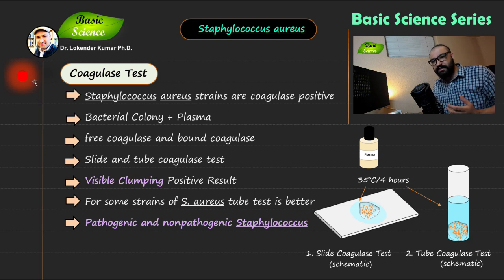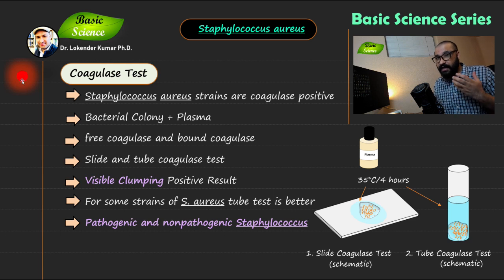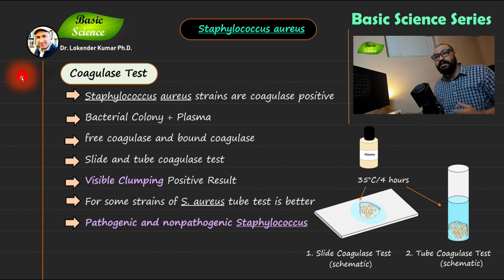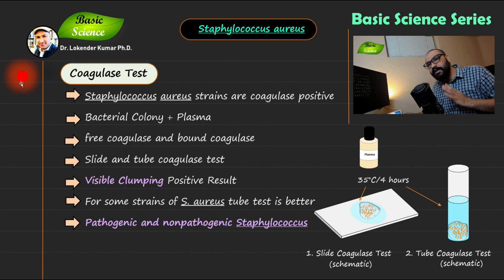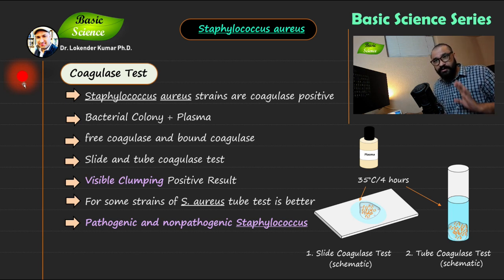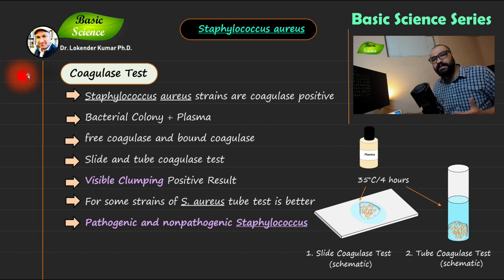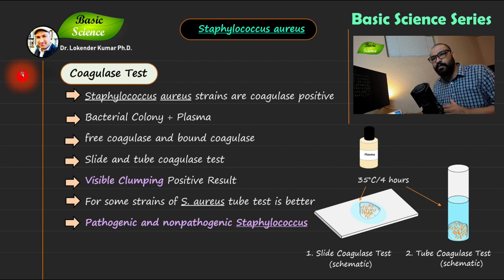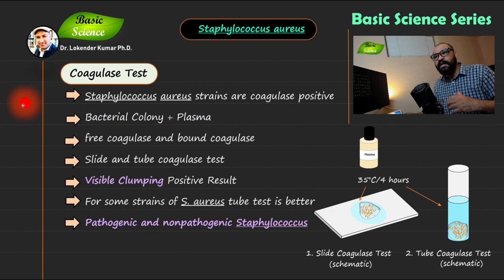Now let's move on to the coagulase test. In the coagulase test, there will be production of the coagulase enzyme by the bacteria you are testing. If there is production of coagulase enzyme, there will be a reaction known as coagulation. I have made a detailed video on coagulation — the link will be in the description. In this video let's quickly review how to perform this test.